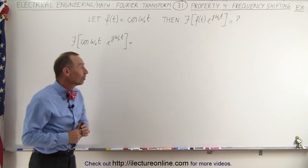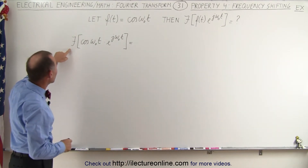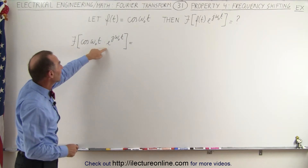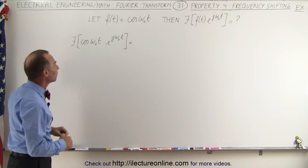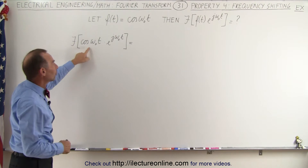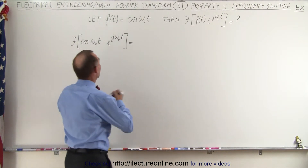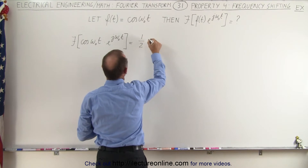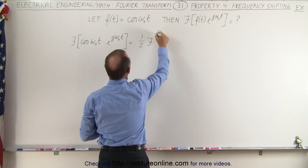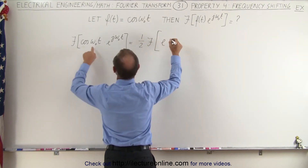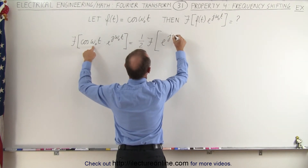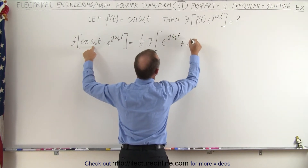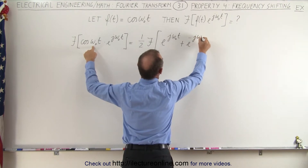So let's go ahead and see what this looks like. We're going to take the Fourier transform of cosine of omega t times e to the j omega sub-naught t. We're going to rewrite the cosine as one-half times the Fourier transform of e to the j omega sub-naught t plus e to the minus j omega sub-naught t.